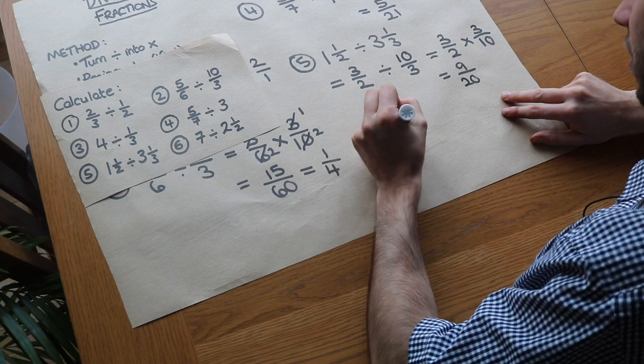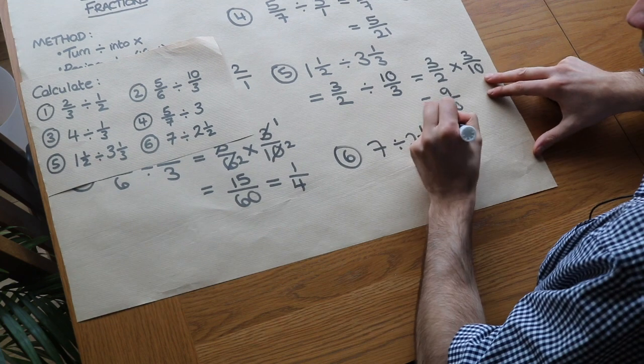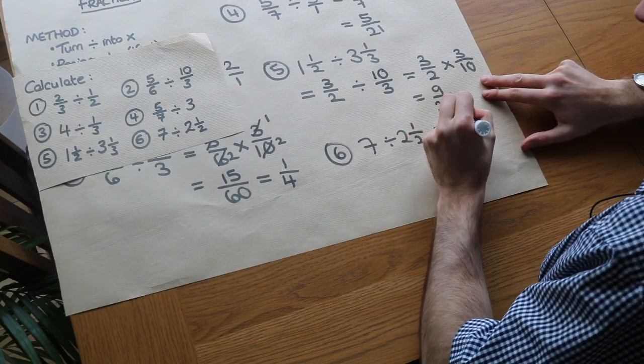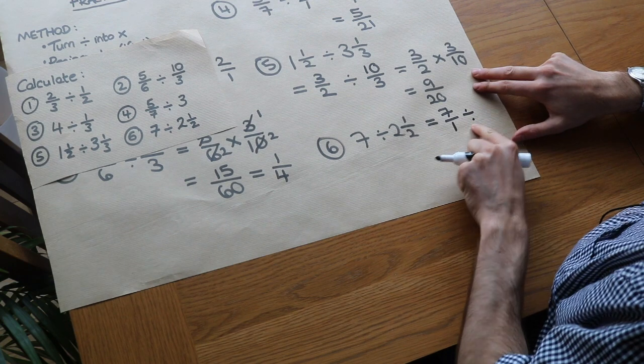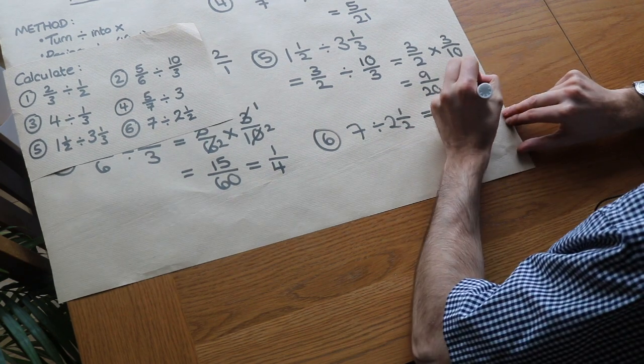The very last one, question 6. We've got 7 divided by 2 and 1/2. We can write the 7 as 7/1. I'm still going to keep this as divide—I'm not doing the flip yet. And 2 and 1/2 I can write as 5/2.